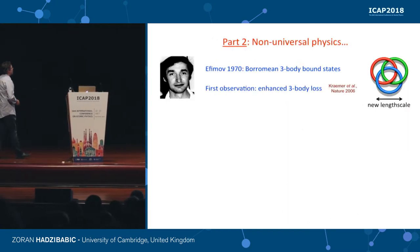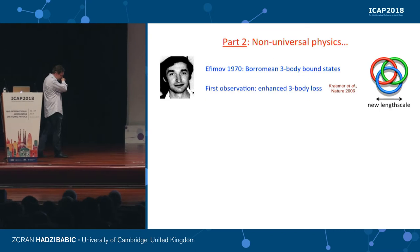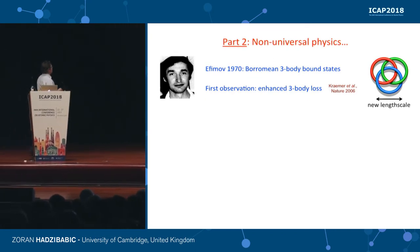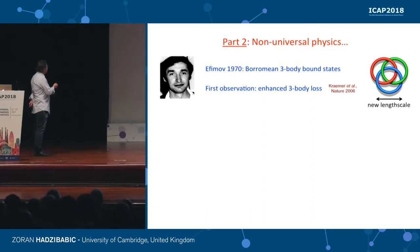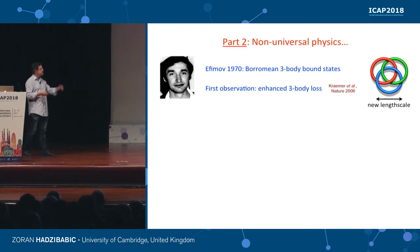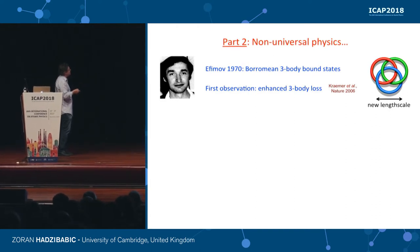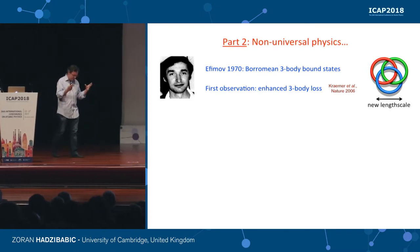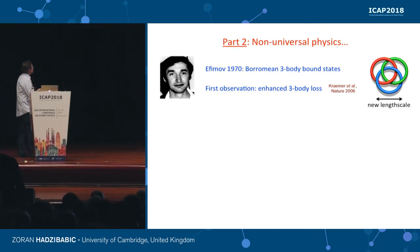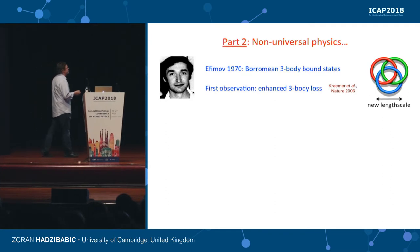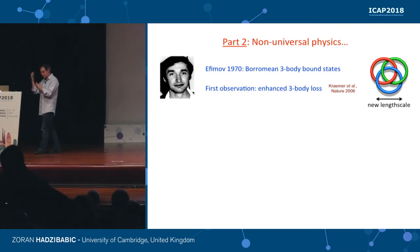Now I'll switch gears. Not everything should be universal, and that's because of Vitaly Efimov, a nuclear physicist who back in 1970 predicted that close to a Feshbach resonance you have Borromean three-body bound states — three particles bound together such that if you remove any one of them, the other two separate as well. There are no two-body bound states, but there is a three-body bound state. This was first seen in cold atoms in Innsbruck about 12 years ago. Efimov physics has been studied a lot since then, but all those studies focused on modifications to loss processes.